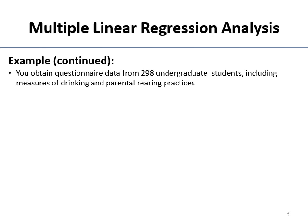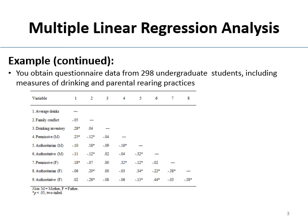You get data from 298 undergraduate students. This is someone's actual dissertation, including measures of drinking and their parents' rearing practices. And we start with a big correlation matrix. Note that the first column — one through eight up above stand for the variables — like one is average drinks, two is family conflict, four is permissiveness.